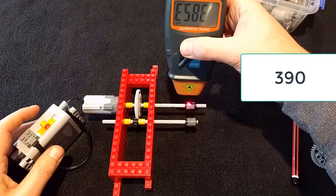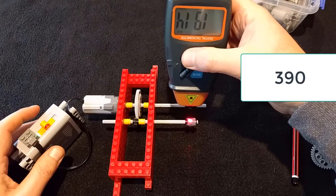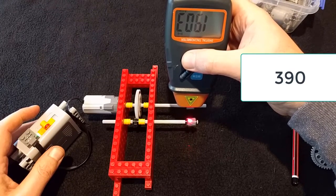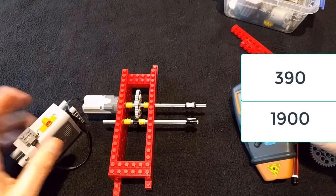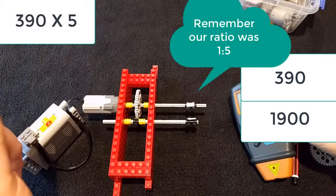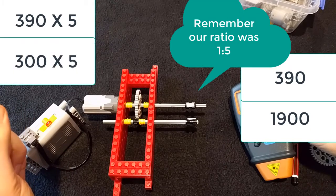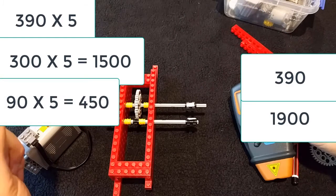Here's about it, so we'll go 390. What's this one doing here? About 1900. Now what's 390 times 5? 300 times 5 is 1500, and 90 times 5 is 450, and then together, 1950.